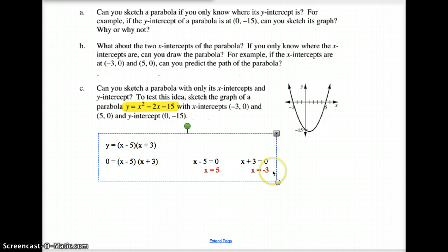So the zero property product just means we take the two factors that we got, we set those equal to zero, and we solve for our x-intercepts. So those become our x-intercepts.